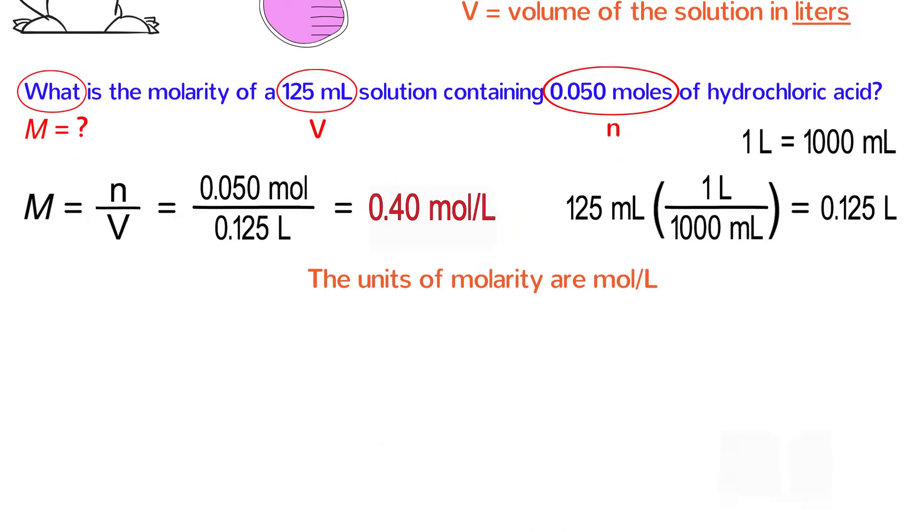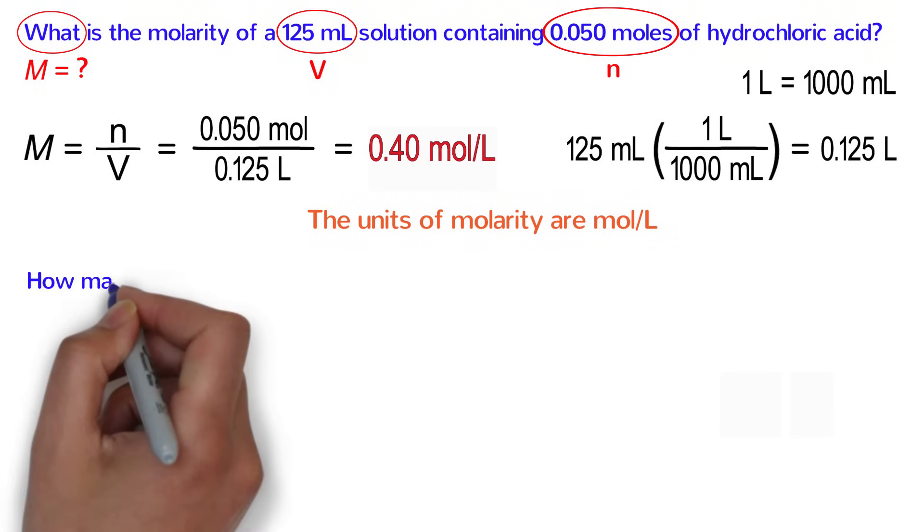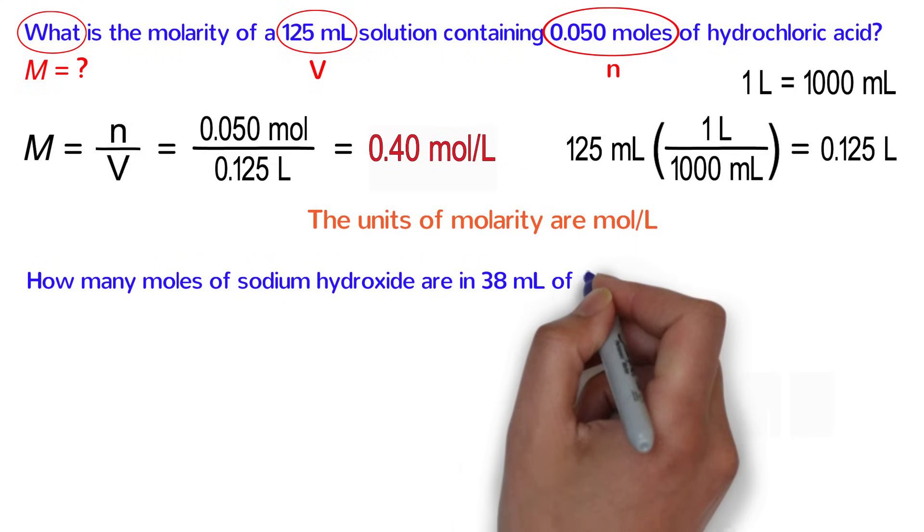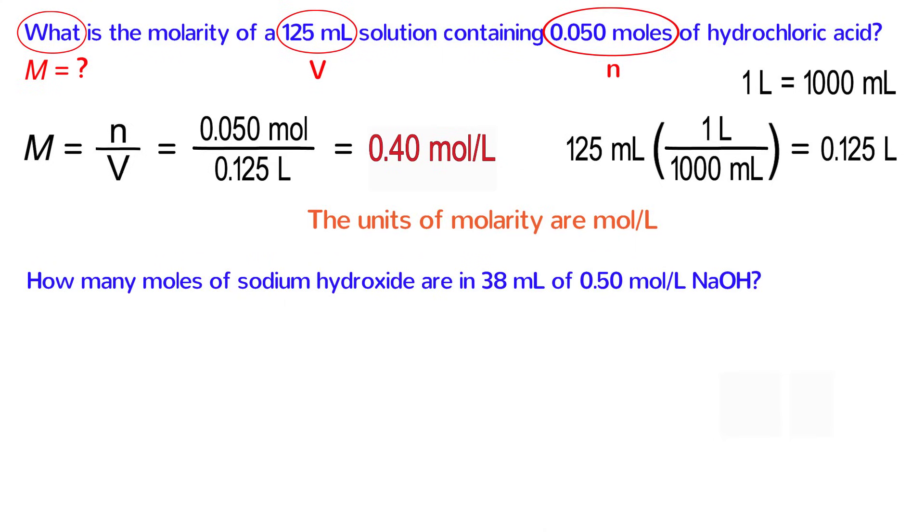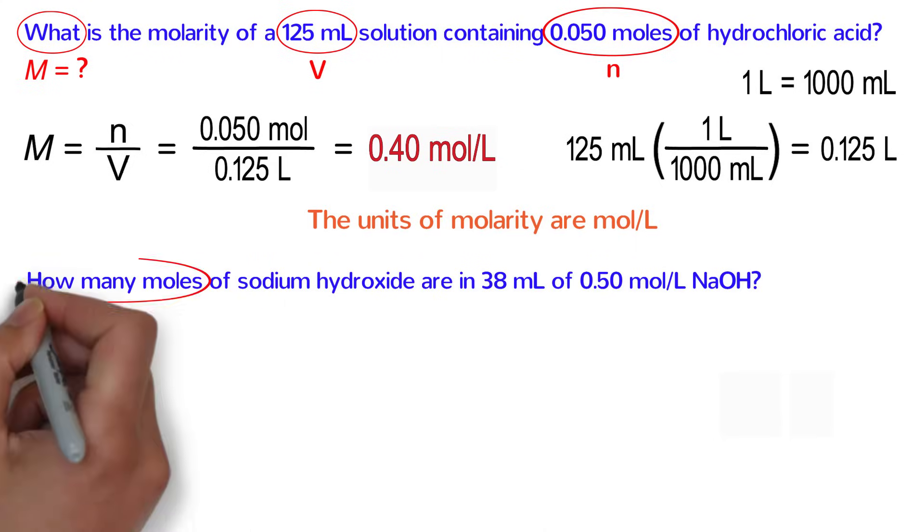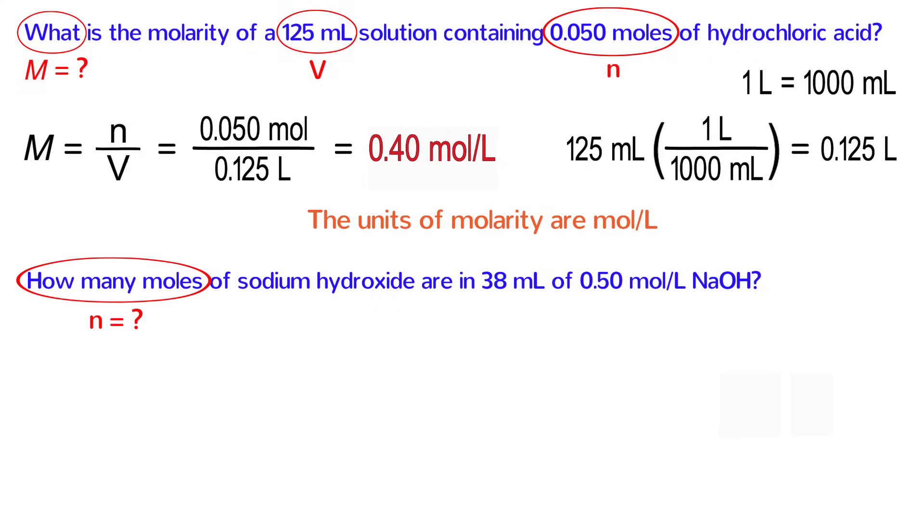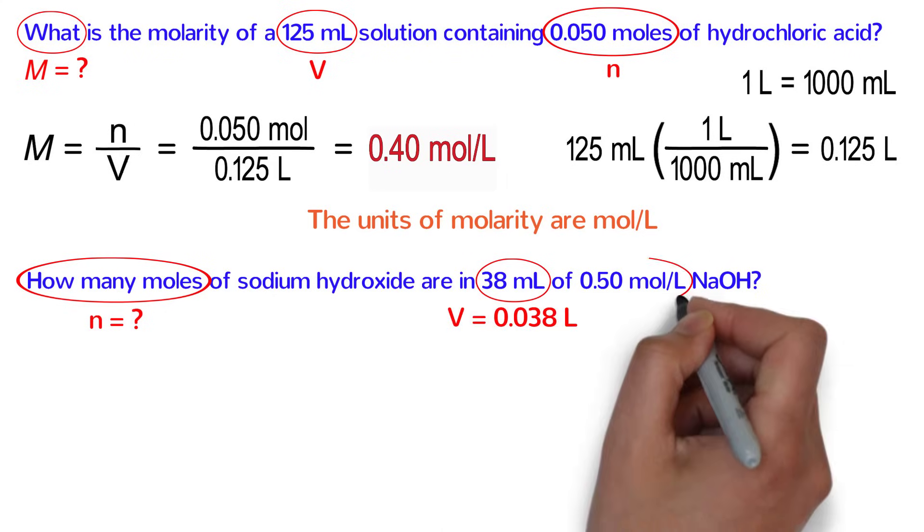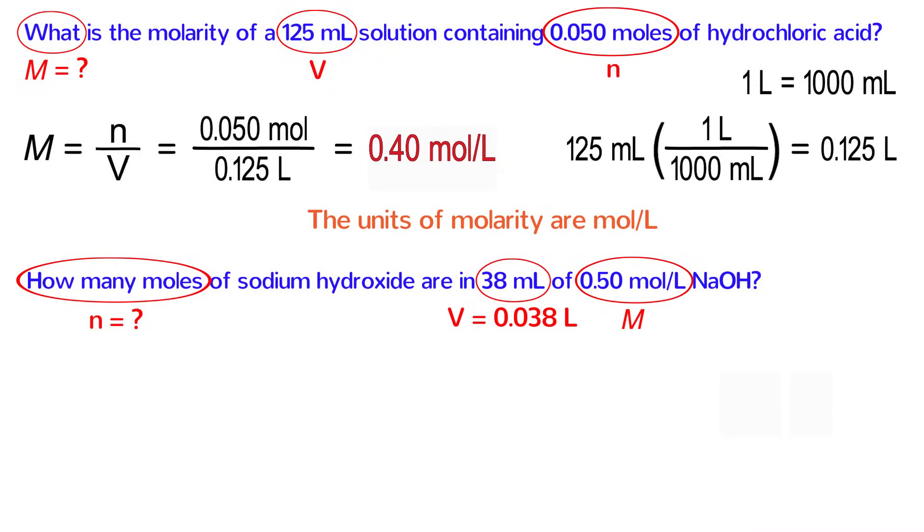Let's try another problem where we are solving for something different. How many moles of sodium hydroxide are in 38 milliliters of 0.5 moles per liter sodium hydroxide? The problem is asking us to calculate moles, and it tells us that the volume is 38 milliliters. However, for molarity, we will need to convert that to liters, which we can do simply by moving the decimal point three places to the left. 0.50 moles per liter is the molarity. Next, write down the appropriate equation.